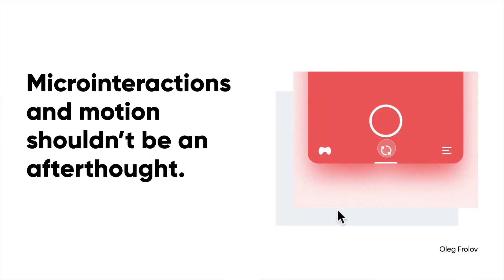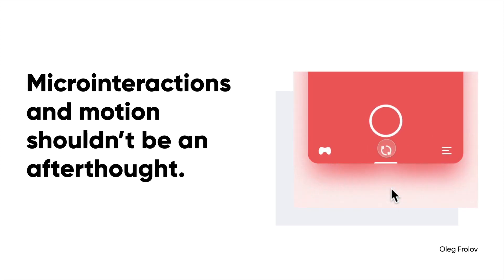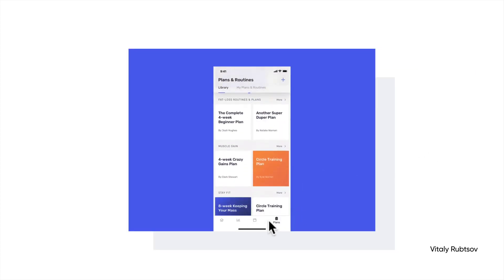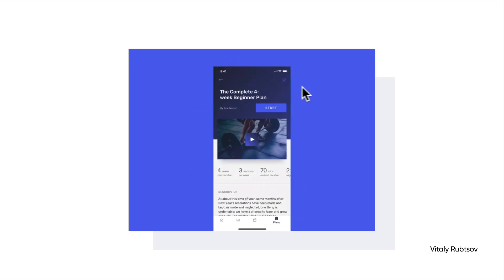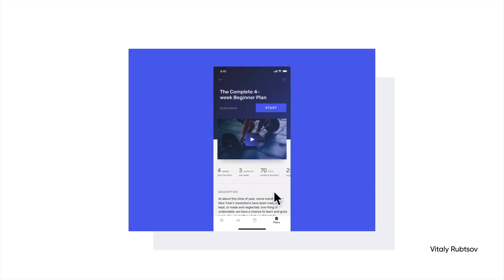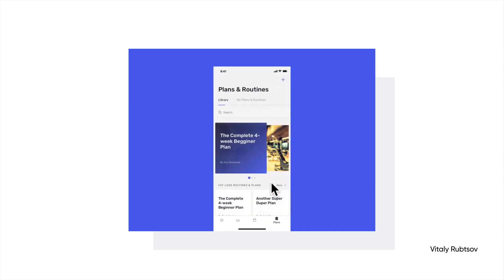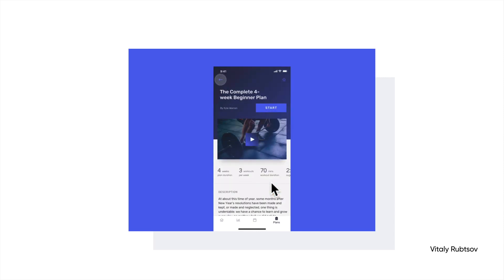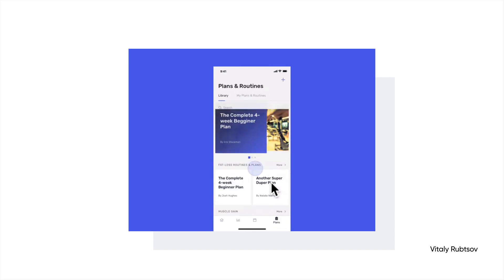The next topic is animations and micro-interactions. These shouldn't be an afterthought — you should be thinking about them right from the beginning of your design process, even before you get to high-fidelity designs. Animations are a great tool to describe state transitions. As you can see here, the transition really helps users know exactly what's happening. If I'm switching pages, I can see that state transition from right to left. If this happened instantaneously, it would be much more confusing and jarring for the user.